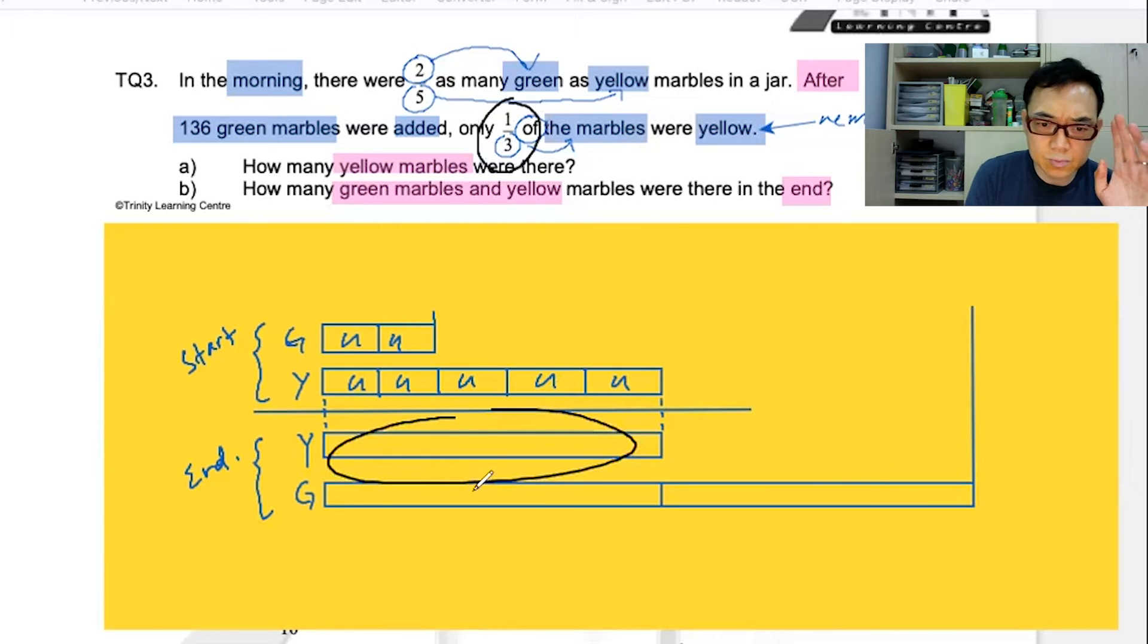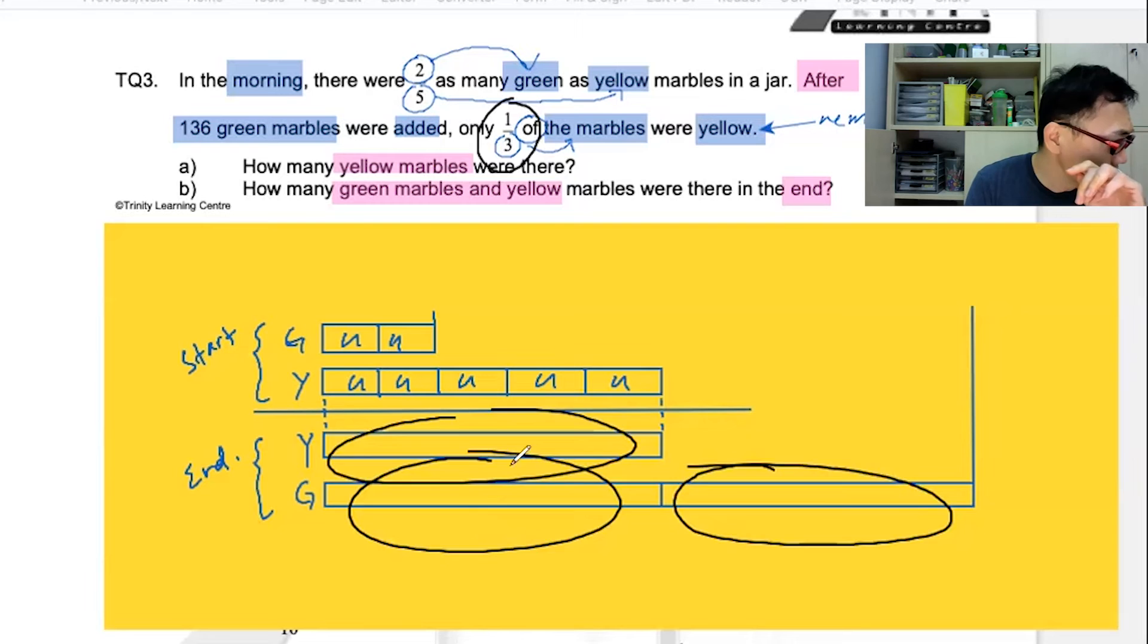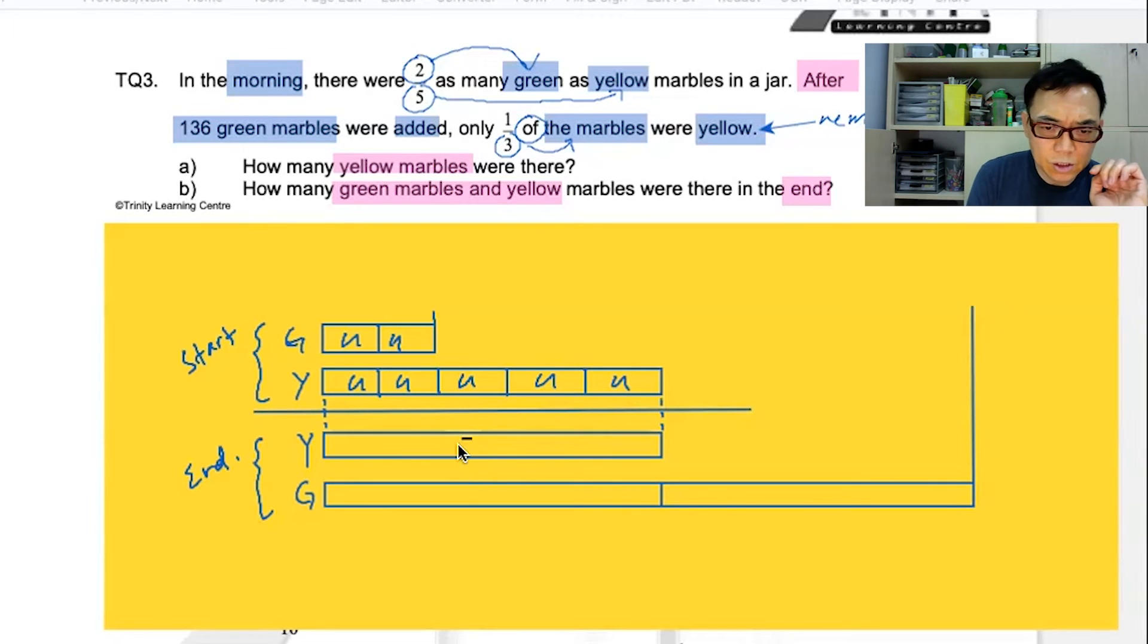This is the one-third. This is another one-third. This is another one-third. Total three-thirds, right? And yes, you're right. This is clearly five units, as you can see from here. This is five units.